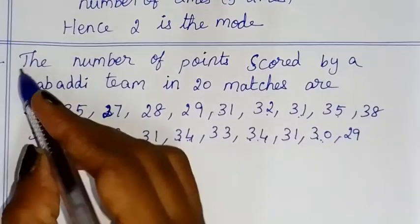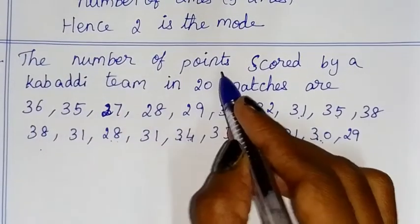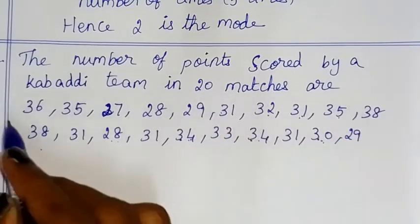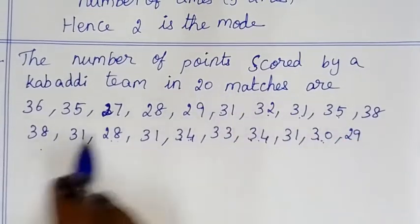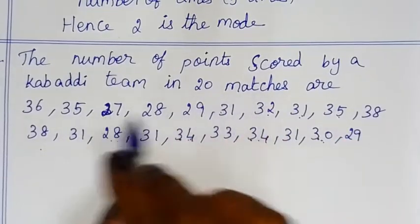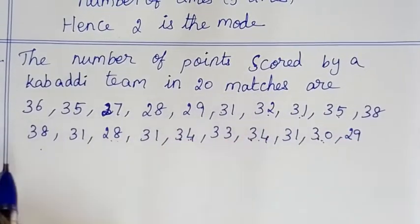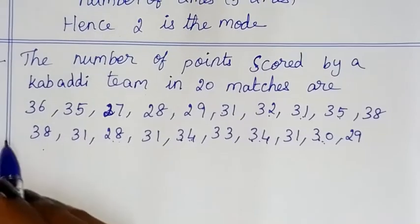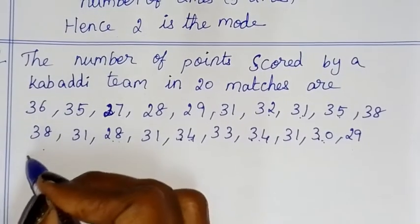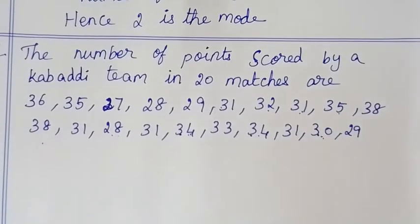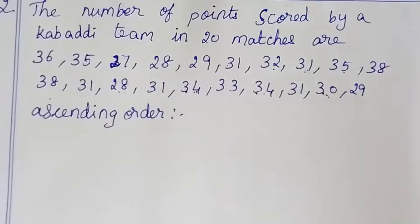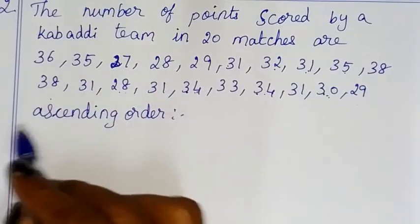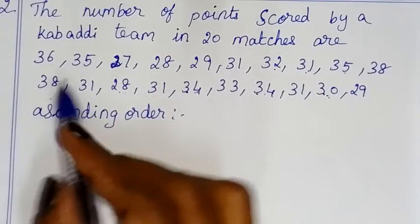Now, the number of points scored by a Kabaddi team in 20 matches are given — 20 matches, 20 scores. To find the mode, we first arrange in ascending order, small to big.